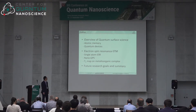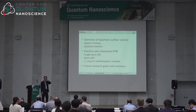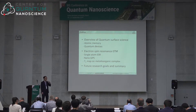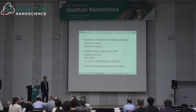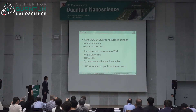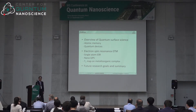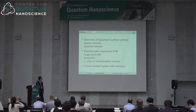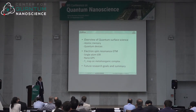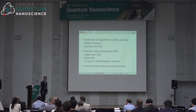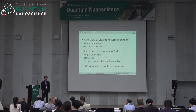There are three topics. First I'll talk about single atom ESR — what the driving mechanism is and what we do. Then I'll discuss what we call nano GPS and give a few examples of how that works. Then one of our recent results on a T1 map on metallo-organic complexes, and I'll wrap up with future research goals and summary.